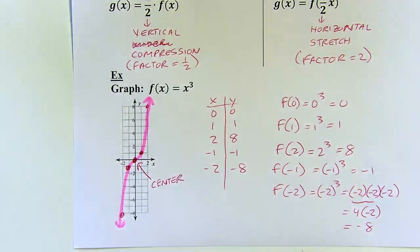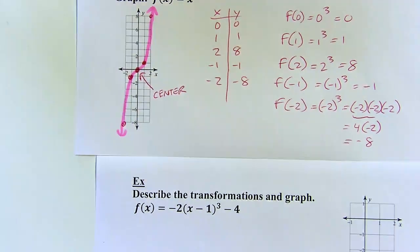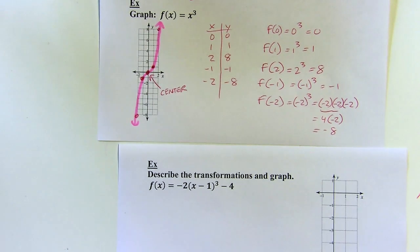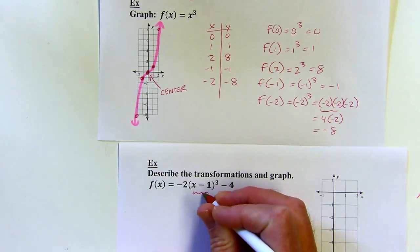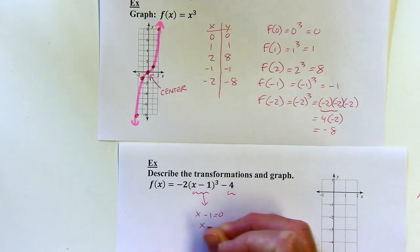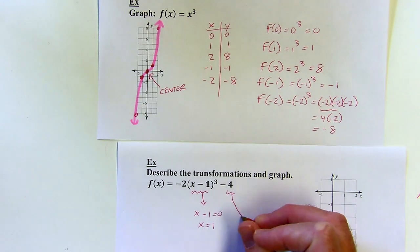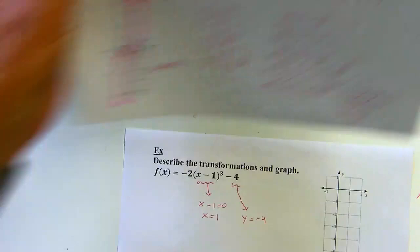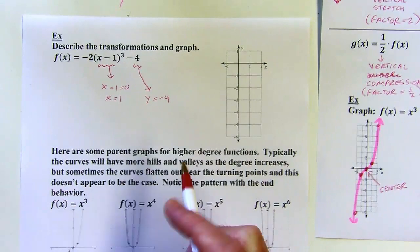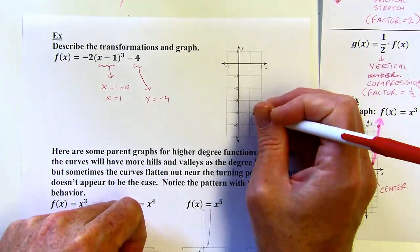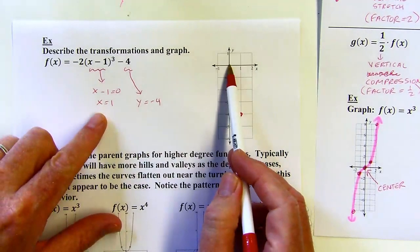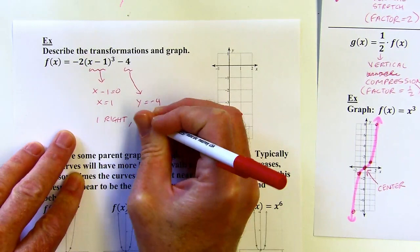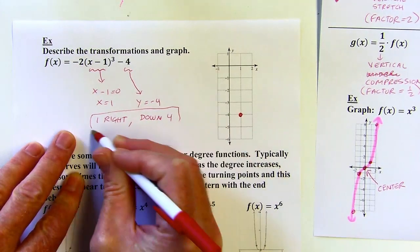So with this parent graph in mind, let's try to do some transformations. We're going to describe the transformations here. This is a cubic function, so I'm going to have some sort of an S-curve. What I like to do first is find the center when graphing this — take the contents inside, set it equal to zero. That gives me the x-coordinate of my center. Whatever's out here is going to be the y-coordinate. So I've got (1, -4), and describing the transformations: the center shifted one right, down four — it's a translation, one right, down four.